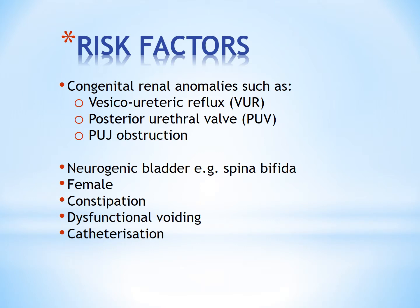There are several risk factors that predispose a child to have urinary tract infection. Babies born with congenital renal anomalies such as vesicoureteric reflux, posterior urethral valve, or pelvi-ureteric junction obstruction are at risk. Children with spina bifida may have neurogenic bladder, leading to urinary stasis which predisposes them to UTI. UTIs are more common in girls compared to boys because of their shorter urethra. Constipation and dysfunctional voiding lead to incomplete bladder emptying, and bladder catheterization introduces organisms into the bladder.